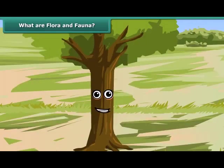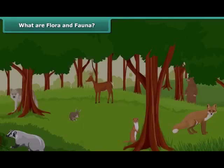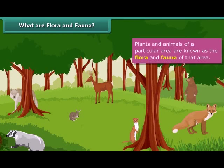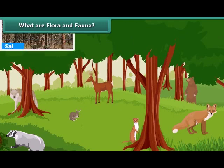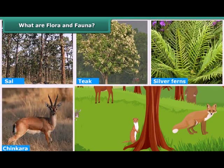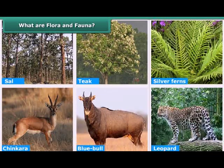Students, you must have observed that some animals and plants typically belong to a particular area. Plants and animals of a particular area are known as the flora and fauna of that area. For example, Sal, tea, and silver ferns are the flora, and chicanara, blue bull, and leopard are the fauna of the Punchmari Biosphere Reserve.